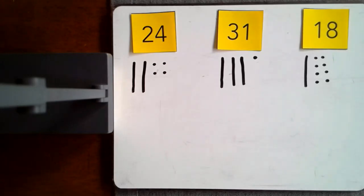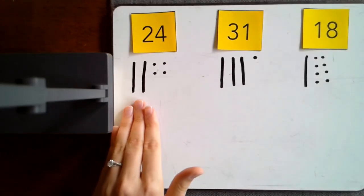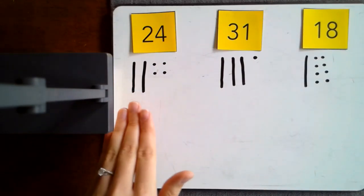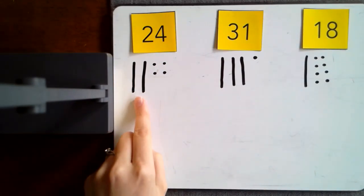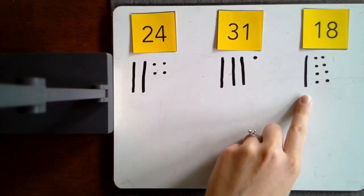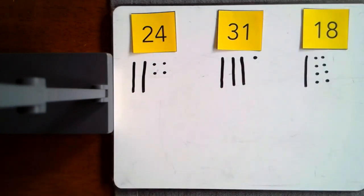Now by looking at these first graders, I would start by comparing the tens because we know tens are worth more. I have two tens here, three tens here, and one ten here. Right now I think that 18 is the least. It is the smallest.